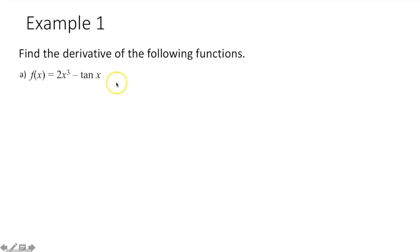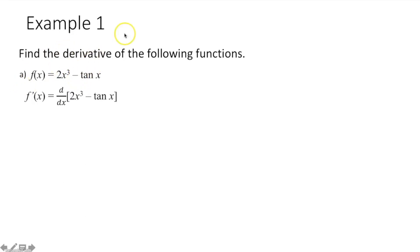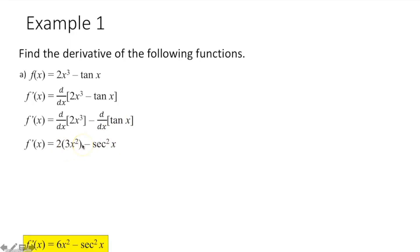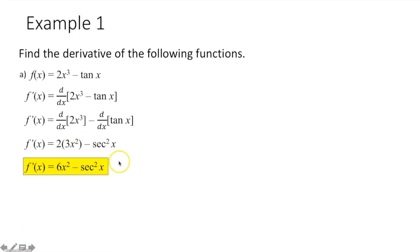Example 1: find the derivative of the following functions. For part a, we have 2x³ minus tan x. By the sum and difference rule, we take the derivative of each term. The derivative of 2x³ uses the constant multiple rule: derivative of x³ is 3x², multiplied by 2 gives 6x². The derivative of tan x is secant squared x. So the derivative is 6x² minus secant squared x.